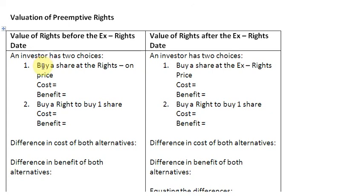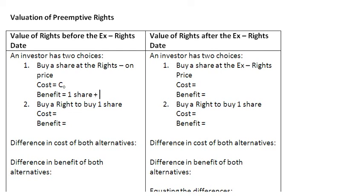Number one: the investor can go ahead and buy a share at the rights-on price. If they do that, the price payable would be C_O — the rights-on price — so that becomes the cost of this alternative. The benefit of this alternative is that you get one share along with one right.